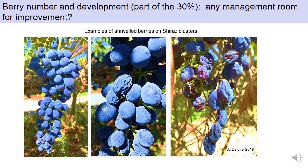The plateau of berry sugar accumulation is reached around 26 to 30 days after the onset of veraison. From that plateau onwards, a fruit will start to lose water because, as a hypothesis, the phloem is no longer functioning. The xylem was perhaps no longer functioning from veraison onwards, and from the plateau, the phloem as well is not functioning anymore. This is where and when the fruit starts to lose water, and the ultimate stage of water loss is berry shriveling, which is of course very important in terms of yield.